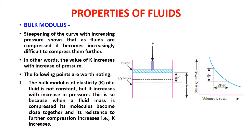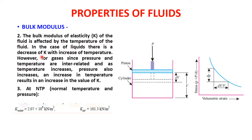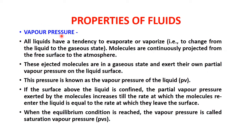The bulk modulus is also affected by temperature. For liquids, the value of k decreases with increase in temperature. However, for gases, since pressure and temperature are interrelated, an increase in temperature results in an increase in k. At normal temperature and pressure, the bulk modulus of water is 2.07 × 10⁶ kN/m², and for air it is 101.3 kN/m².